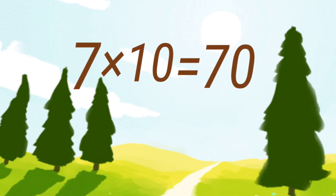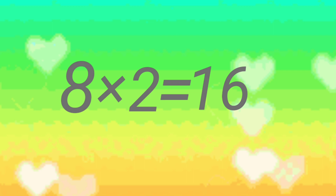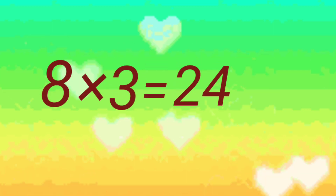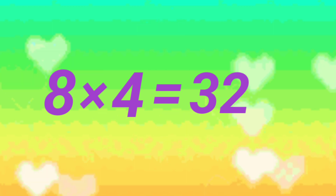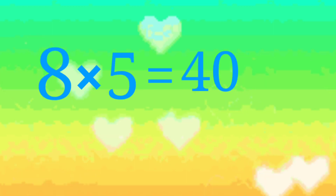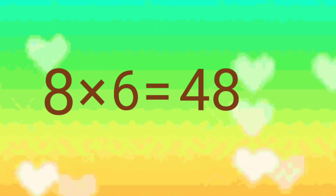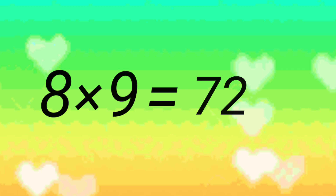7 tens are 70. 8 on the 8. 8 twos are 16. 8 twos are 24. 4 twos are 32. 5 twos are 40. 8 twos are 48.